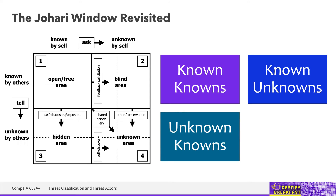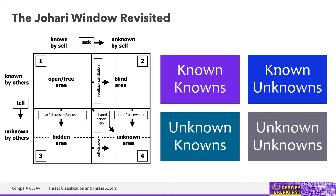Then we have unknown knowns — these are things that we could understand but are not aware of; knowledge that you don't know exists. This is similar to the zero-day that someone else discovers in your software. And then unknown unknowns — when you don't even know how little you know. For example, attacks that you are not even aware exist. This reflects one of the diseases of the social aspect of the internet, where everyone has a strong opinion regardless of how little they know about the topic.